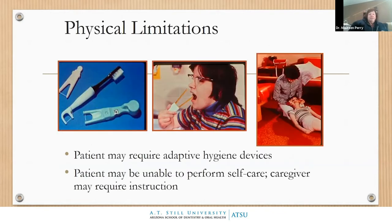For physical limitations, we may need to make adaptive hygiene devices. There are Y-shaped floss holders that you can buy commercially — they're inexpensive and easier to use on someone else, and certainly easier for someone who has problems physically brushing their own teeth. I don't care where the patient gets their teeth brushed or flossing done. Any place that's comfortable for the patient is just fine.